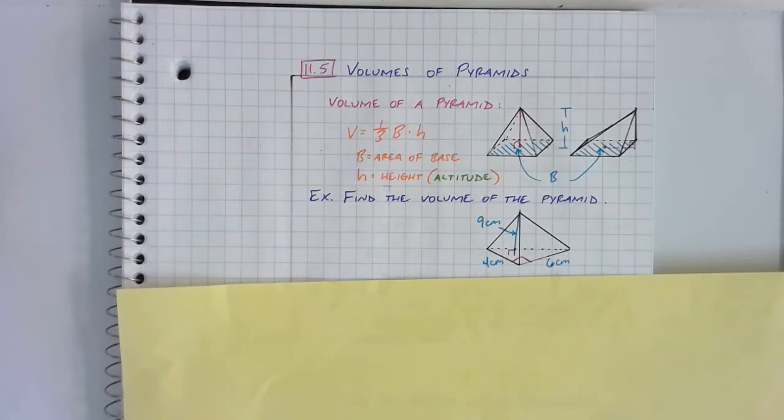And if you recall from Section 4, we learned that the volume of a prism, or a cylinder for that matter—a cylinder is basically just the circular base version of a prism—in both those cases, the volume or the space inside broke down to the formula of volume equaling the area of the base, capital B, times the height or altitude or depth of that prism or cylinder. That was Section 4.